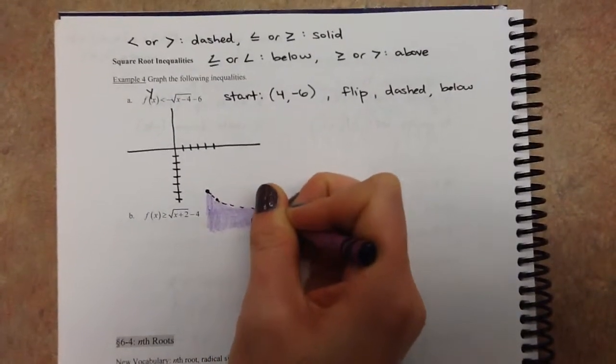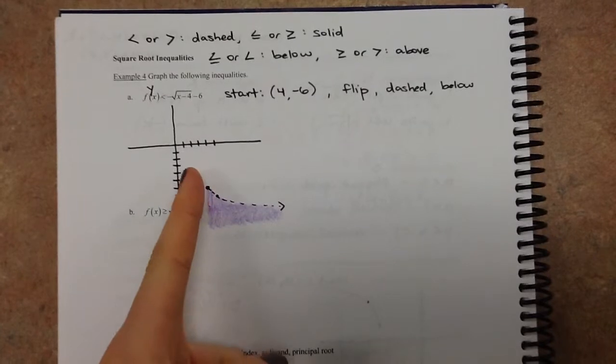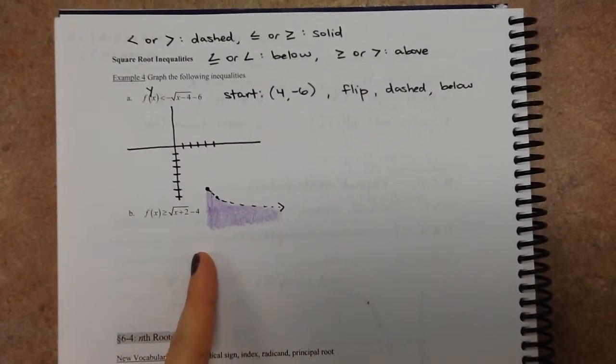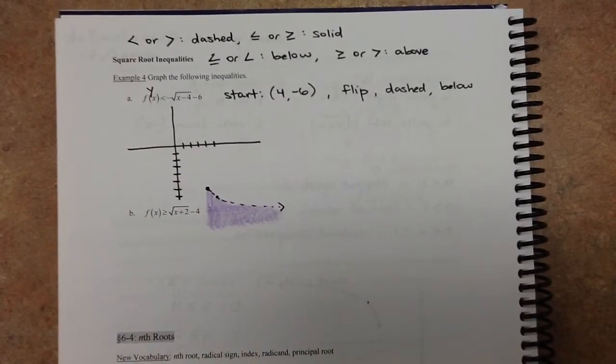Alright, so it looks something like this. And of course, if I wasn't running into another problem, we would extend that graph further. This part is very important. Make sure it stops when the x value starts. You shouldn't be shading anywhere to the left, because that is not included in your domain.